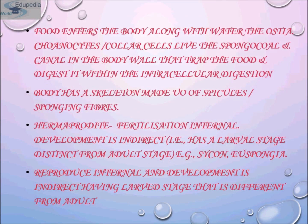Sponges are hermaphroditic, meaning eggs and sperms are produced by the same individual. They reproduce asexually by fragmentation and sexually by the formation of gametes. Fertilization is internal, and development is indirect, having a larval stage which is morphologically distinct from the adult. Asexual reproduction occurs by means of external buds.